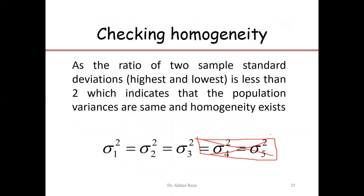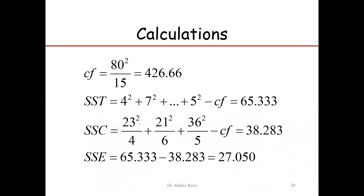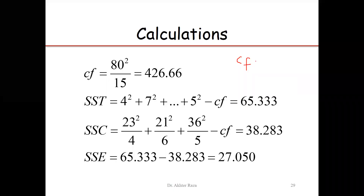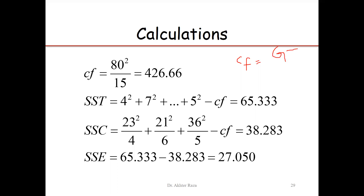This is the sum of squares between automobiles — between the brands. The correction factor (CF) is obtained as the grand total squared divided by the total number of observations N, where N = n1 + n2 + n3, representing the total number of cars in the sample from brand A, brand B, and brand C.